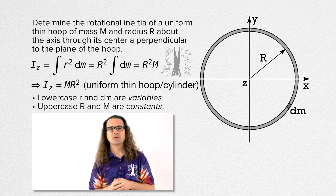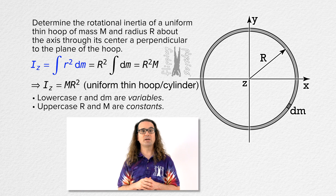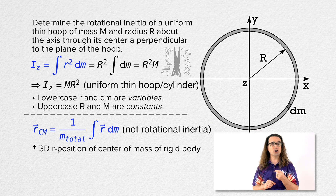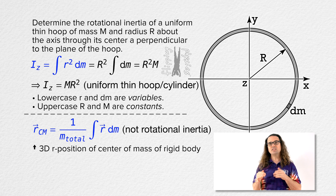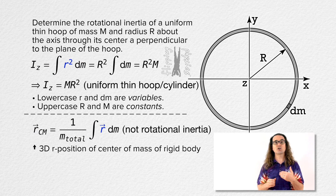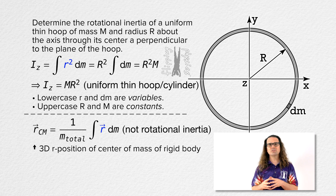And lastly, please do not confuse the rotational inertia of a rigid body equation with the equation for the three-dimensional r position center of mass of a rigid body equation. These two equations look very similar to one another. One equation has r as a vector and the other equation has r squared as a scalar. Because they look so similar, students sometimes confuse the two equations, so please be careful to notice they are two completely different equations.